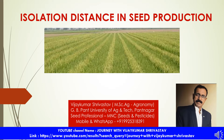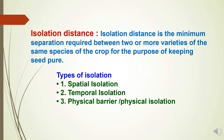Let's move to the presentation. What is isolation distance? Isolation distance is the minimum separation required between two or more varieties of the same species of a crop, for the purpose of keeping seed pure.